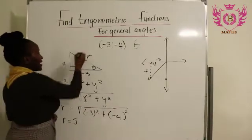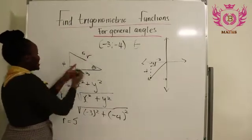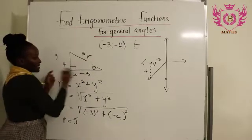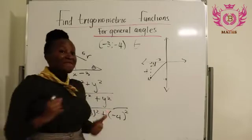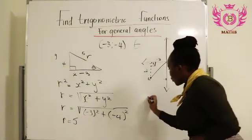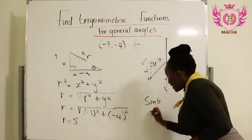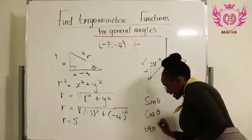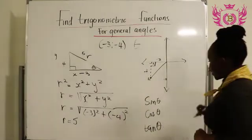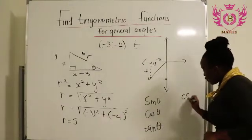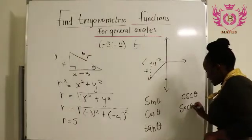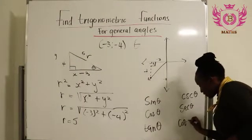Now we have our r as 5 and we set our y is -4 and our x is -3. So now we can find the six trigonometric functions which is sin θ, cos θ, and tan θ. We also have cosec θ, sec θ, and cot θ.